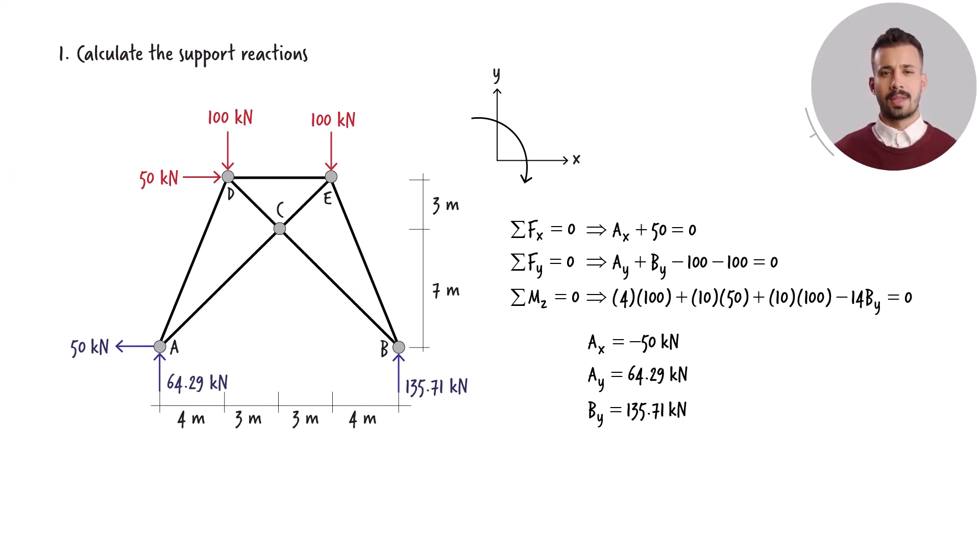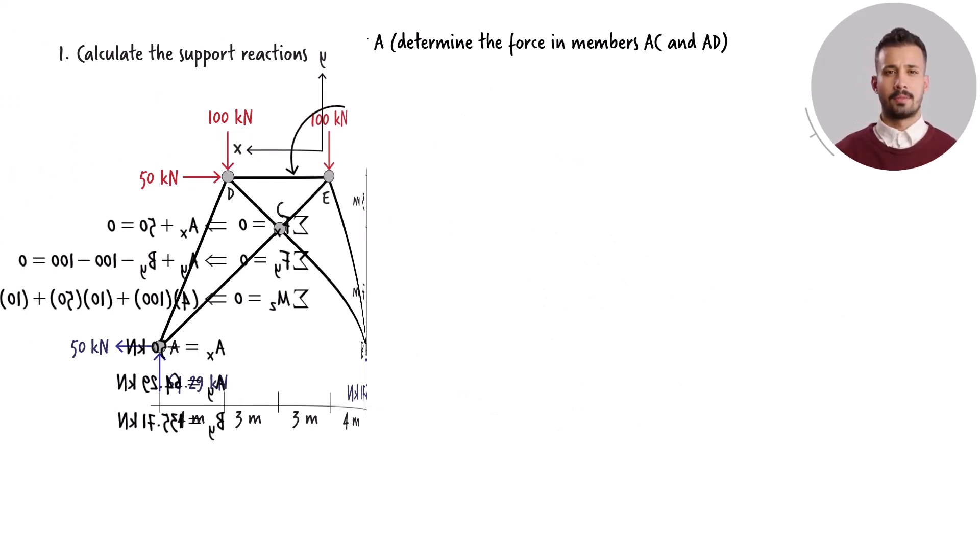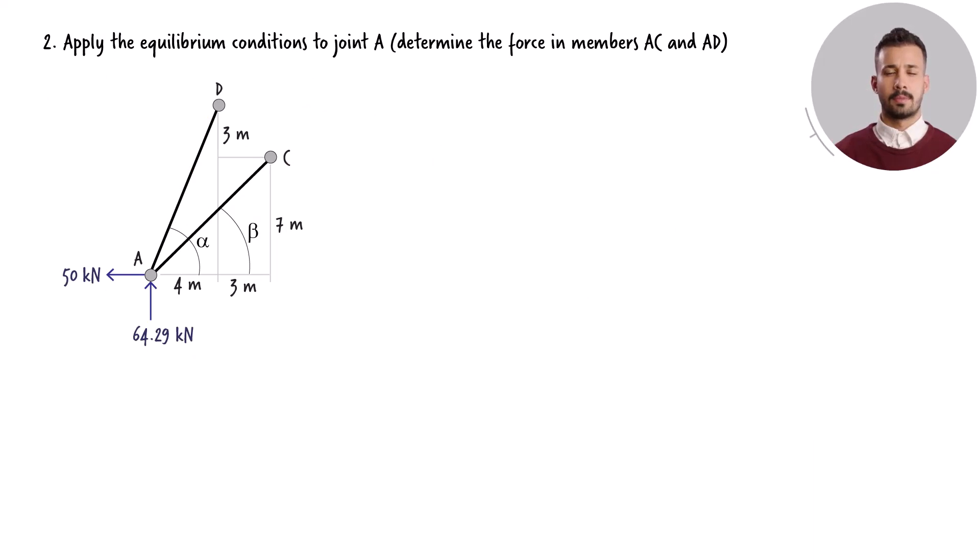We can now proceed to use the equilibrium equations on the joints of the truss. Joint A connects two truss members, AC and AD. Before formulating the equilibrium equations, it's essential to calculate the angles that each structural member forms with the horizontal axis. Given the known geometry of the truss, these angles are straightforward to find.